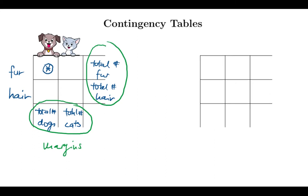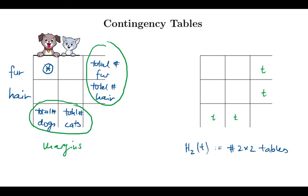We will simplify this problem even further and assume that all of our margins are the same number t. This is a very special case. I will record the number of such two by two contingency tables with a function h sub 2 of t. The literature uses a capital letter H, and 2 stands for the 2 by 2 case — I will follow the notation used elsewhere.